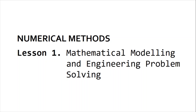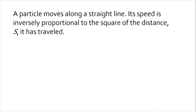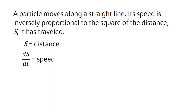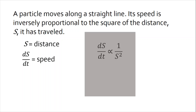If you want to solve an engineering problem, we first have to formulate the problem as a mathematical expression in terms of variables, functions, and equations. As an example, we have a particle that moves along a straight line. Its speed is inversely proportional to the square of the distance s it has traveled. We denote s as the distance. The first derivative of distance with respect to time is the speed or velocity. Relating it to the statement that speed is inversely proportional to the square of the distance, the rate of change of distance would be equal to k over the square of the distance s, where k is the constant of proportionality.